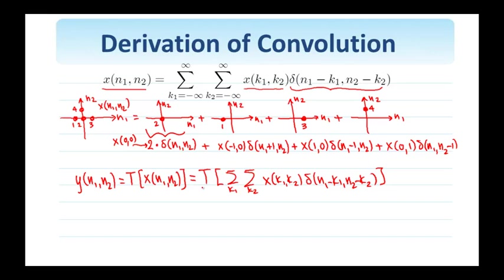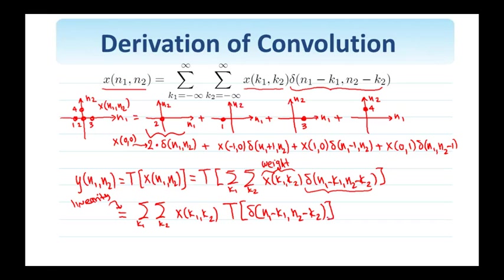Now, I know that the system is linear and spatial invariant. The system accepts inputs that are function of n. So, these deltas are the signals that the system recognizes, operates on, processes. While this x, k1, k2 here, since it's independent of n1 and 2, acts as a weight, as a constant. So, the system sees this weighted sum of signals, and since it's linear, the output of the system, due to linearity, is going to be this sum here of the weighted individual outputs.